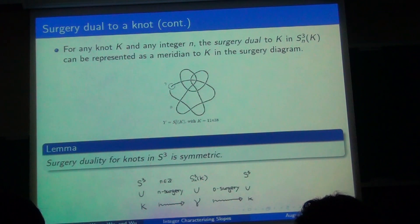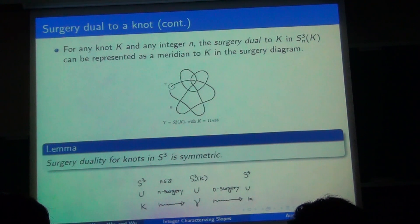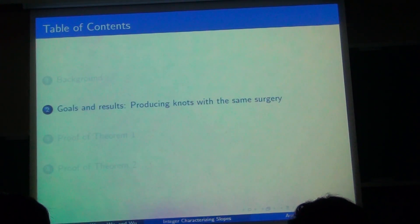And if the surgery slope is an integer, we can see that on the surgery diagram, that the dual γ of K can be represented as the meridian of K. And we prove a lemma later that surgery duality of knots in S³ is symmetric, which is kind of obvious here, but it's important for our work.